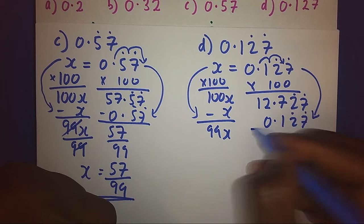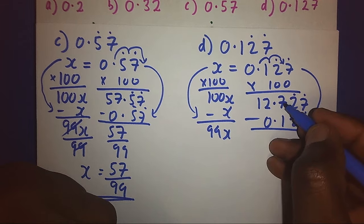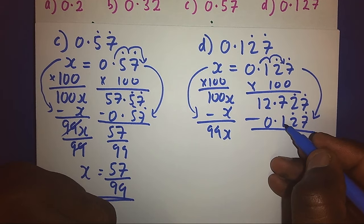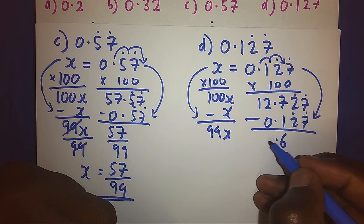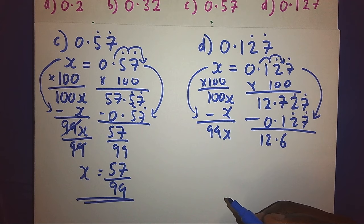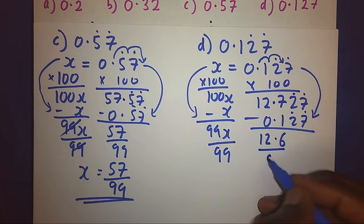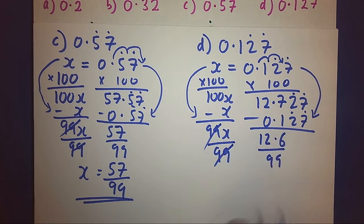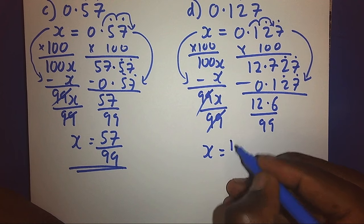This will be 0, 2 and 2 will be 0, and 7 minus 1, 6. 12 minus 0 is 12. After that, we shall divide both sides by 99. Hence, we shall have our x as 12.6 over 99.